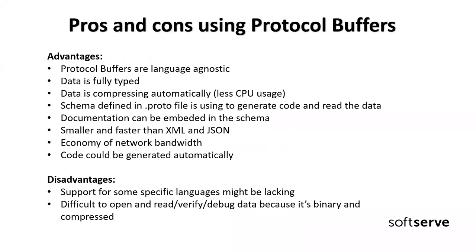What are the advantages and disadvantages of Protocol Buffers? Protocol Buffers are language-agnostic — we can build one Protobuf file and generate code for different languages. The data is fully typed, data is also compressed automatically using less CPU. Documentation can be embedded in the schema. Data in Protocol Buffer is smaller and faster than XML and JSON, which is very important because it saves network bandwidth. Code is generated automatically for many popular programming languages.